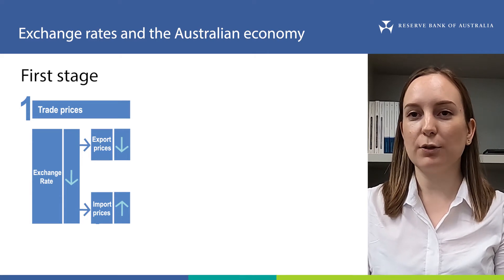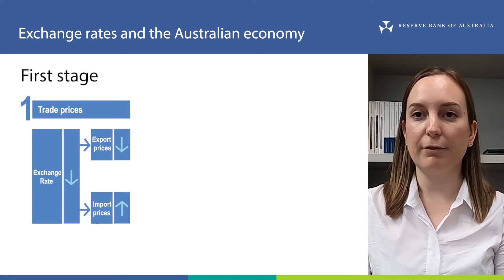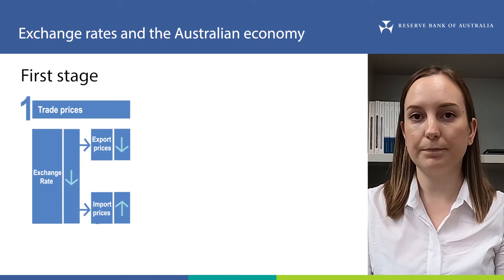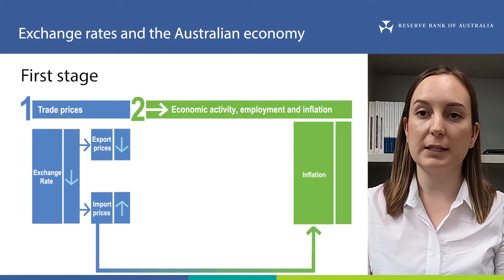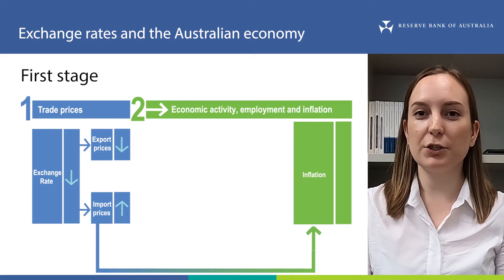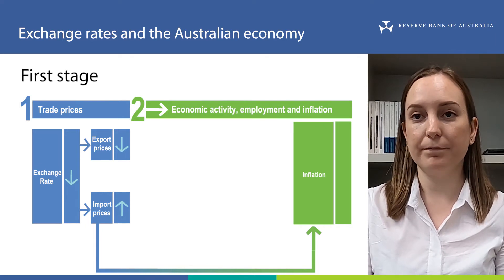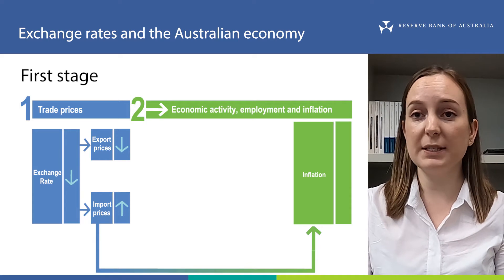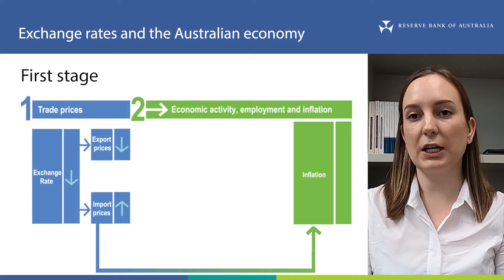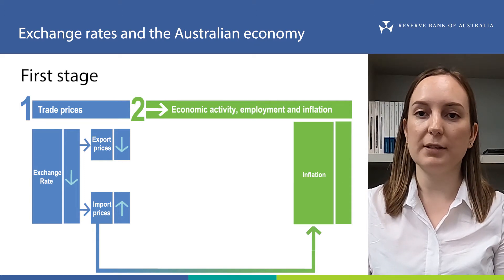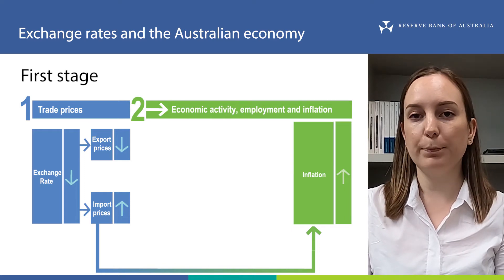To summarise, the first stage looks at how changes in the exchange rate affect the prices of exports and imports. This directly affects consumer price inflation, because some of the goods and services captured in the consumer price index are imported from overseas, and some domestic production uses inputs that come from overseas. This can change the cost of producing things, and businesses may choose to change their prices in response. If the exchange rate depreciates, the increase in import prices will mean inflation also increases.